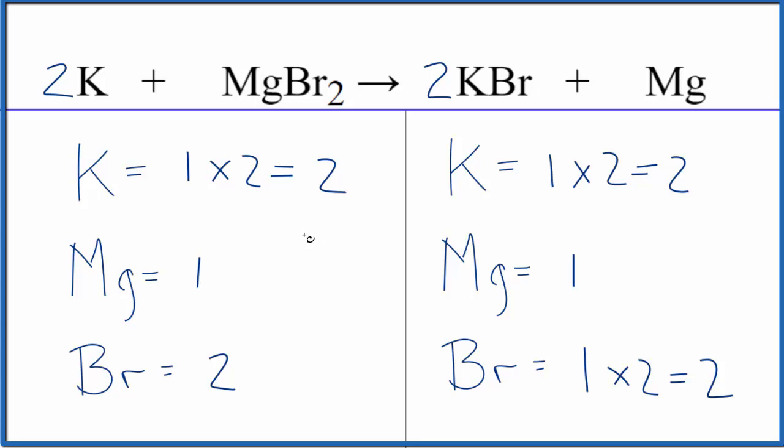You want to write the states, they'll look like this. So once again, we have our single displacement reaction as the type of reaction. This is Dr. B with the balanced equation for K plus MgBr2, potassium plus magnesium bromide. Thanks for watching.